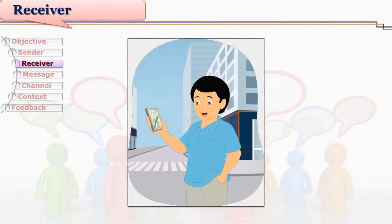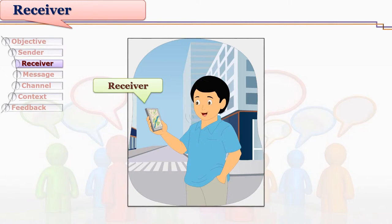Let us see this example: Sohail is giving oral instructions to a search engine, and the search engine is producing results. You might have used this kind of search engine where you don't need to type keywords — you just give oral instructions, spell out the keyword, and the engine searches all relevant information. Here, the receiver is the search engine and the machine on which it is running, receiving oral instructions from Sohail and producing the intended results.